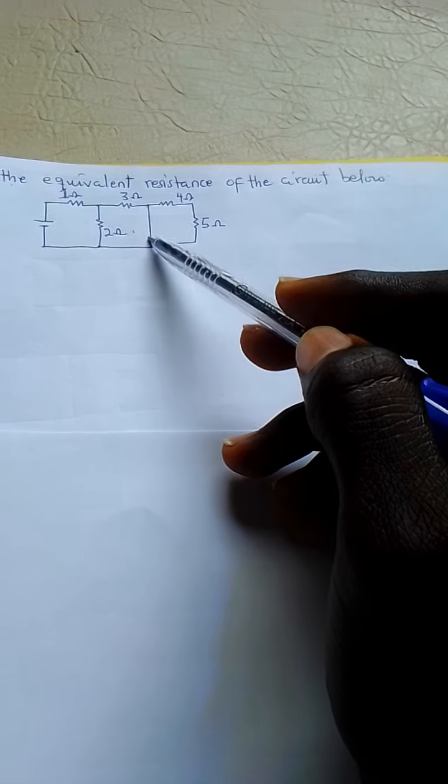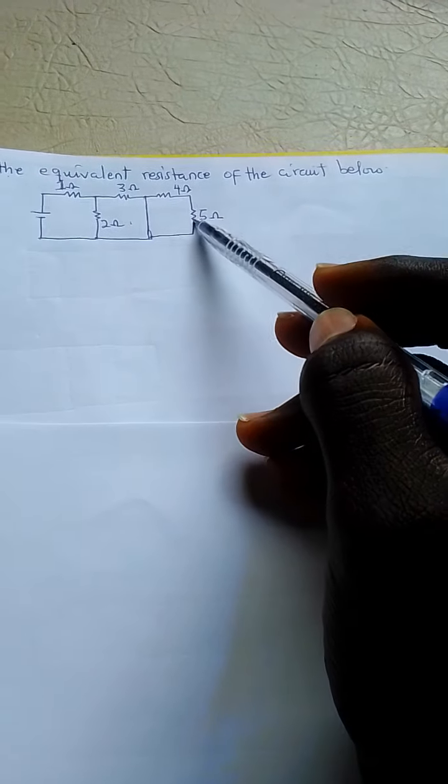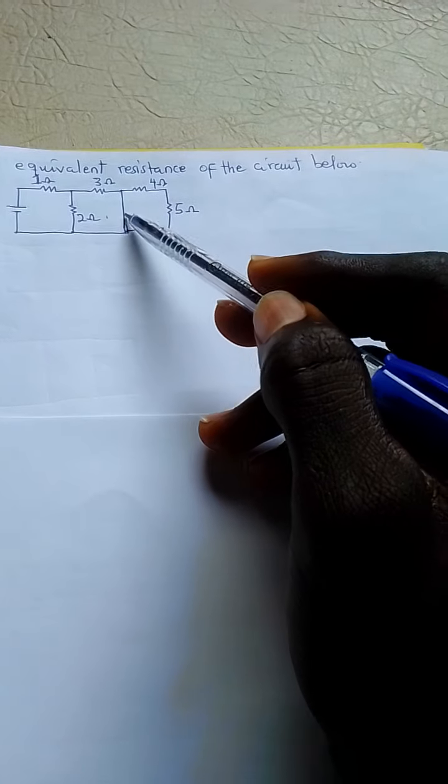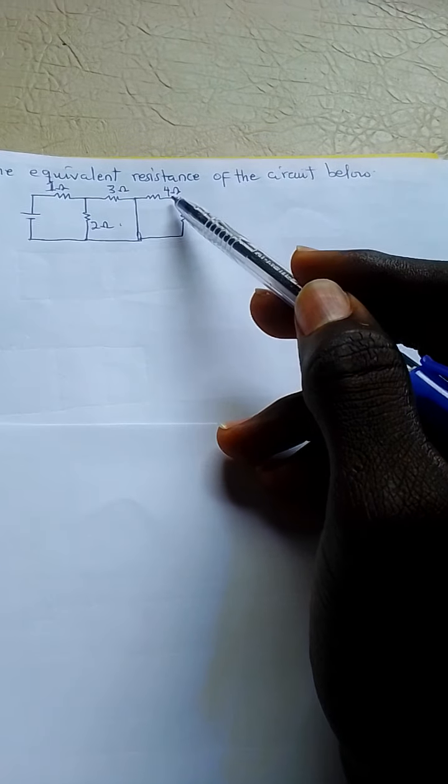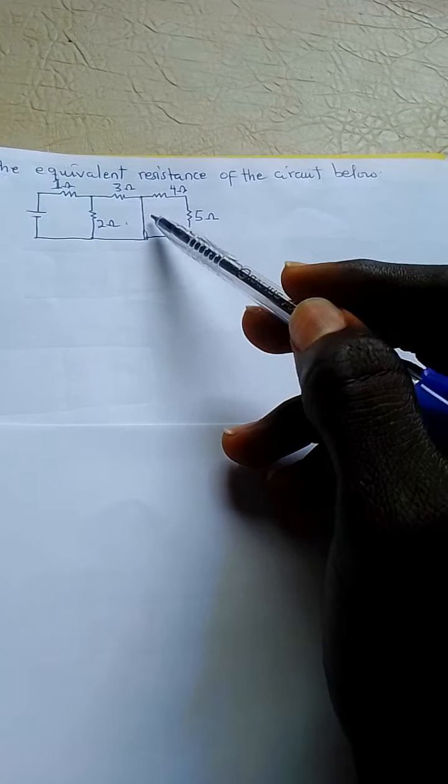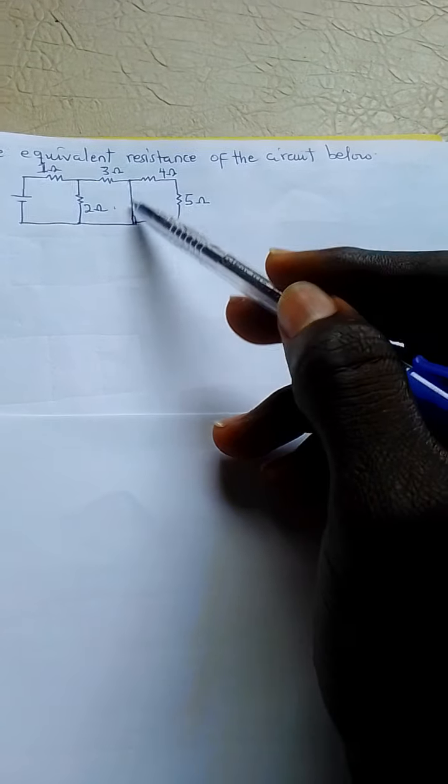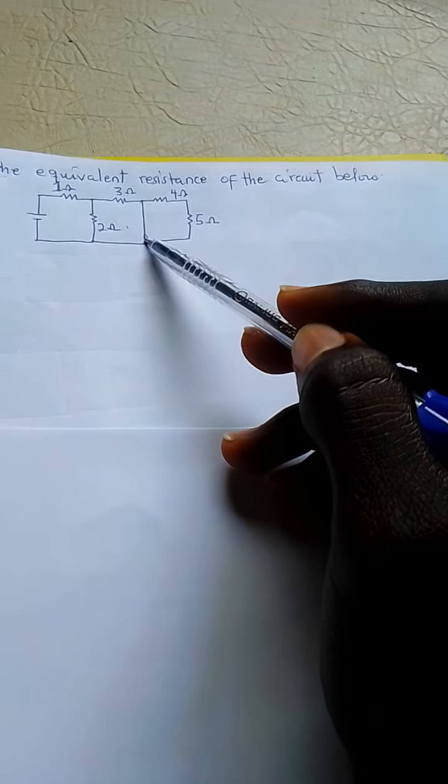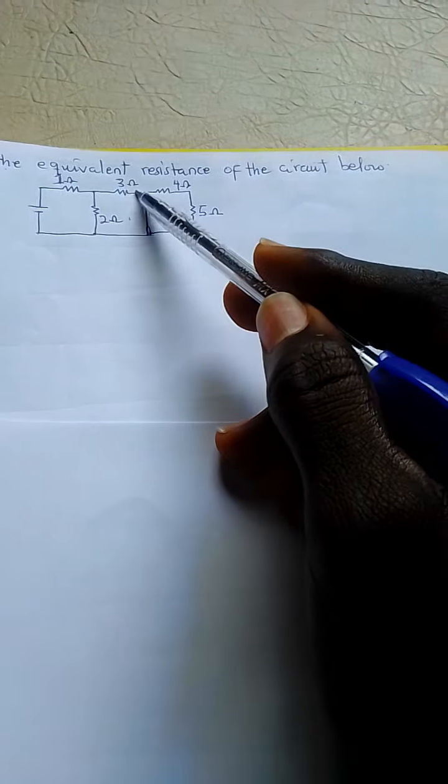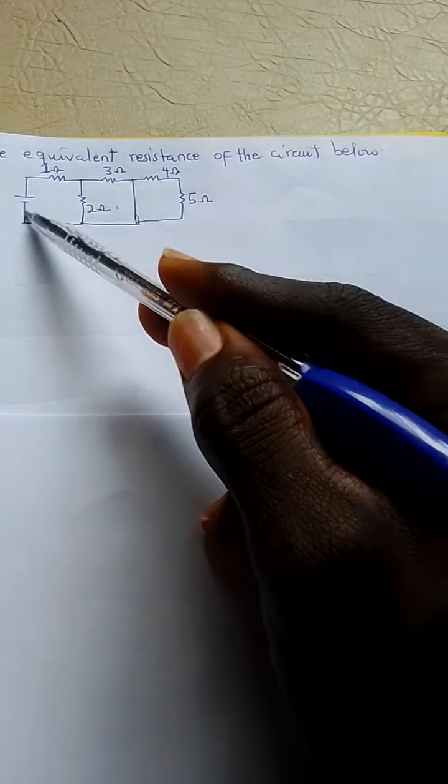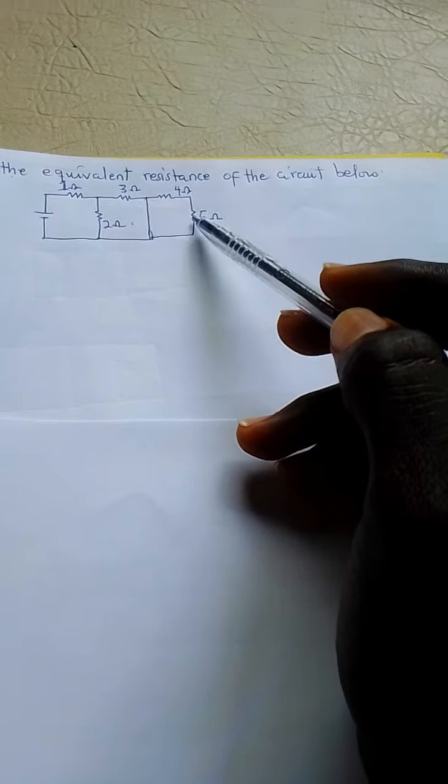Upon reaching this junction, the current will see that I have three paths to flow, but there are obstacles here. Why don't I pass through this free path and escape this place? So this place is a short circuit. It is a branch connecting to nodes where there is zero resistance.